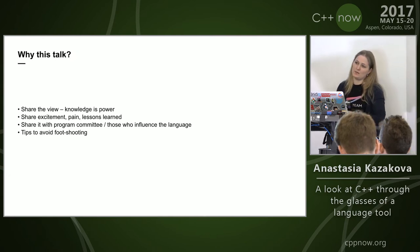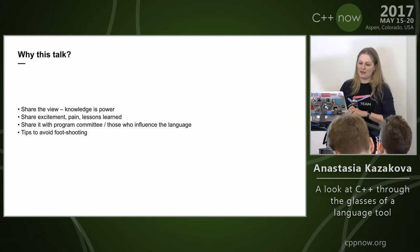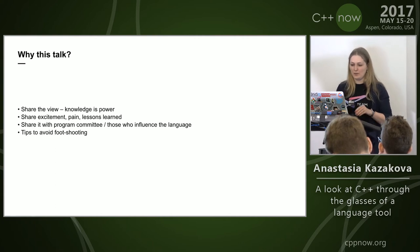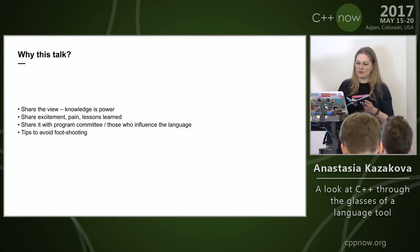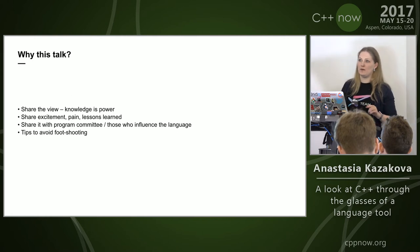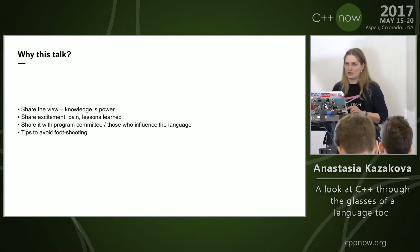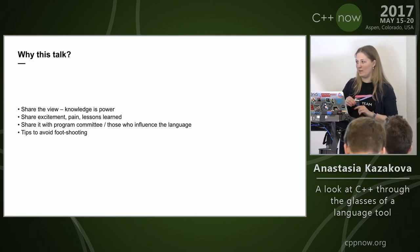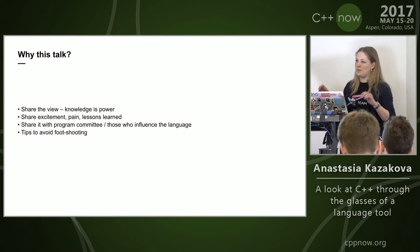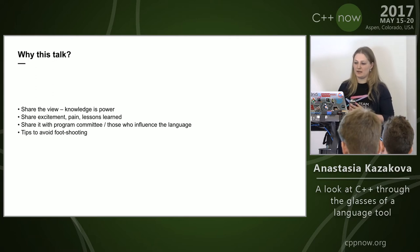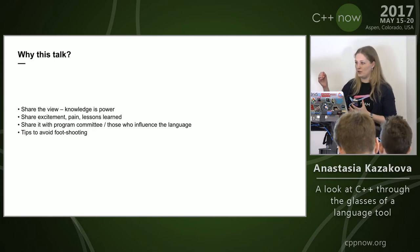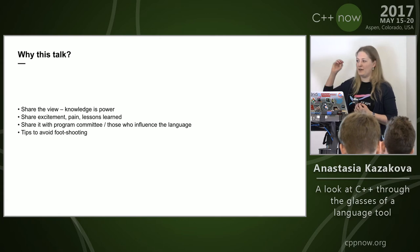I'm sharing these things not only to share our pain and excitement about the language and new features, but because knowledge is power. If you know why the code could break in the IDE, you can maybe help yourself, or think about whether you're doing things in a good way. I also hope there are people from the C++ language committee here who could keep some of these things in mind when thinking about new features.